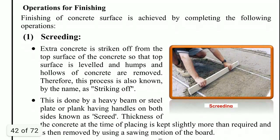The operations of finishing begin with screeding. In screeding, excess concrete is struck off from the top surface so that the top surface is level, and humps and hollows of concrete are removed. This is done by a heavy beam or steel plate or plank having handles on both sides, known as a screed. The thickness of concrete at the time of placing is kept slightly more than required and then removed by a losing sawing motion of the screed.